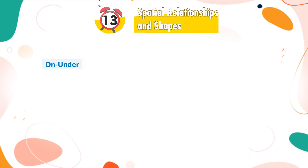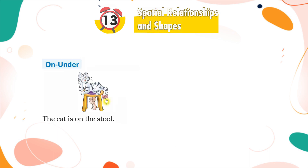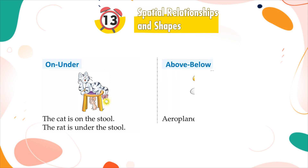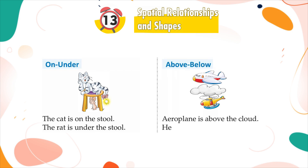On, under: The cat is on the stool. The rat is under the stool. Above, below: The aeroplane is above the cloud. The helicopter is below the cloud.